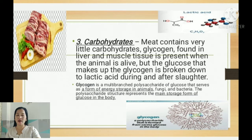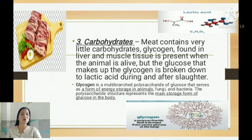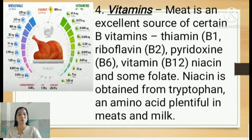Glycogen is a multi-branched polysaccharide of glucose that serves as a form of energy storage in animals, fungi, and bacteria. The polysaccharide structure represents the main storage form of glucose in the body. Glycogen is present in animals while alive, but when they are slaughtered it is broken down into lactic acid. Lactic acid has the chemical formula C₃H₆O₃ — composed of three carbon molecules, six hydrogen molecules, and three oxygen molecules.